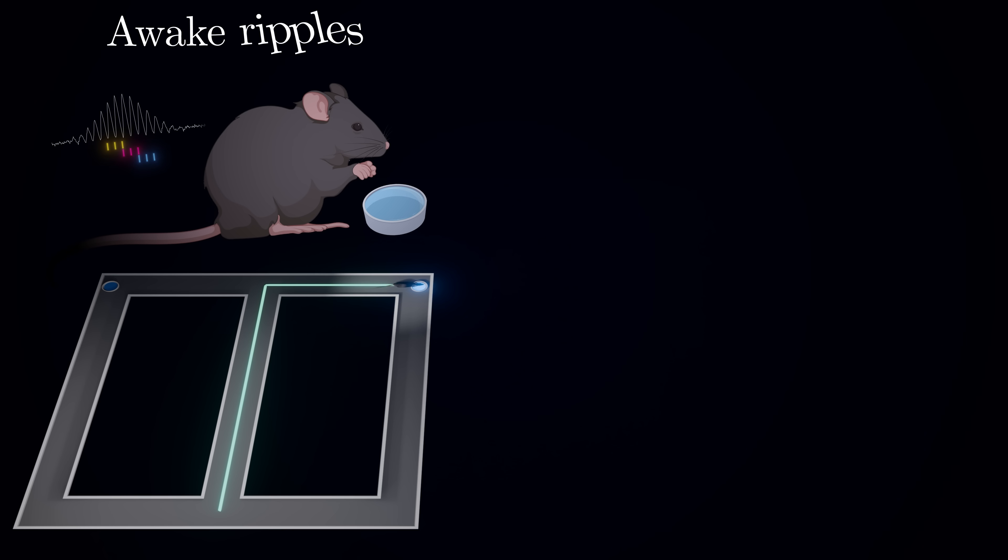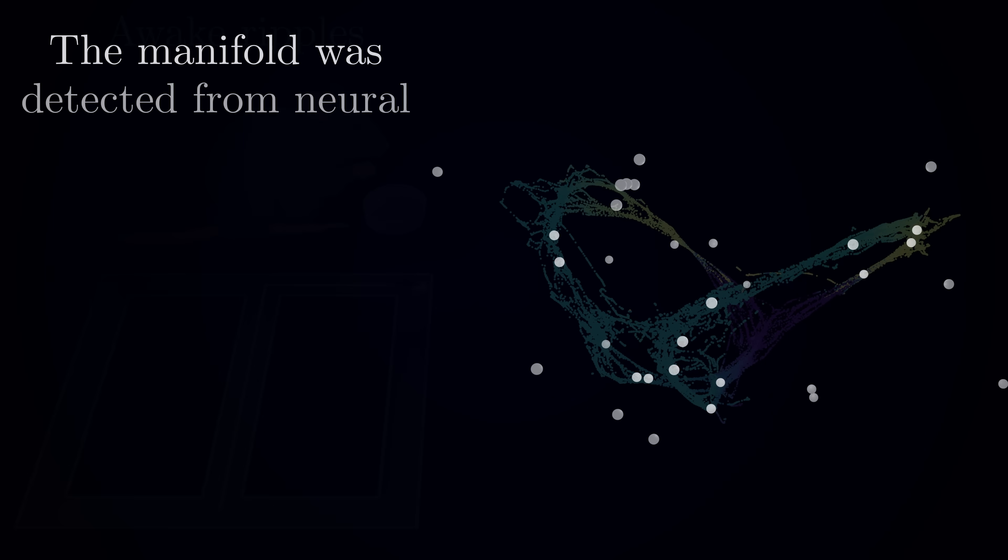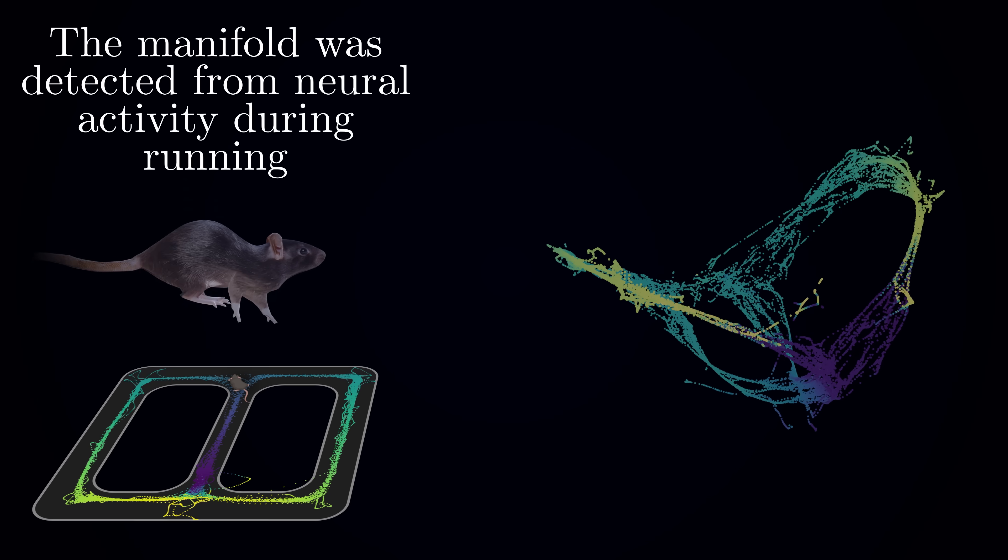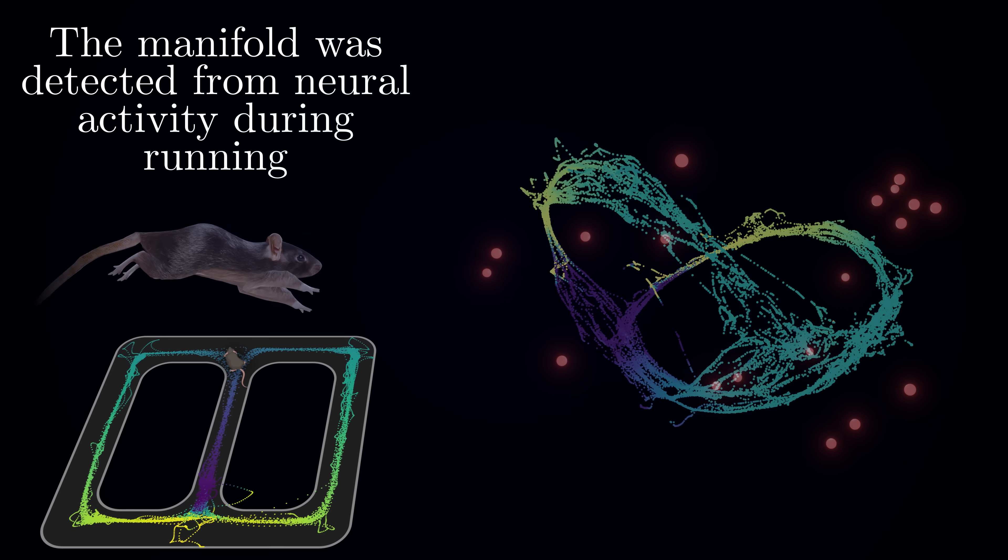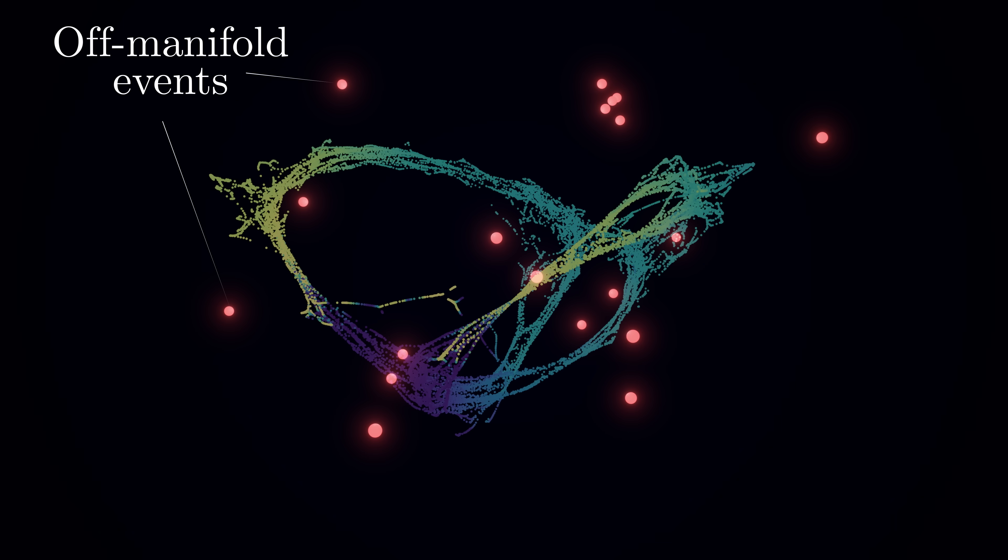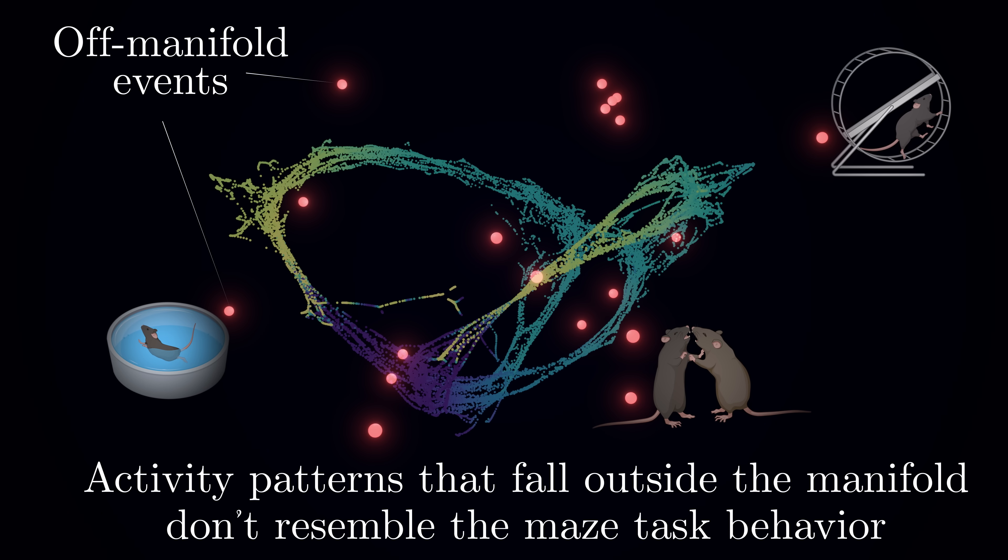Let's start with awake replays that occur when the animal pauses to consume the reward. By projecting neural activity during these ripples onto the learned maze manifold, we can decode their content. It's important to note that our UMAP structure was established purely from neural patterns during active maze running. That's what shaped our manifold. So, when we find ripple events that don't fall onto this maze manifold, it doesn't necessarily mean they are random noise. These off-manifold events simply contain patterns that look completely different from anything UMAP saw during running behavior. They might represent other memories, future planning or different cognitive processes. We just can't decode their content because we lack the right reference frame.